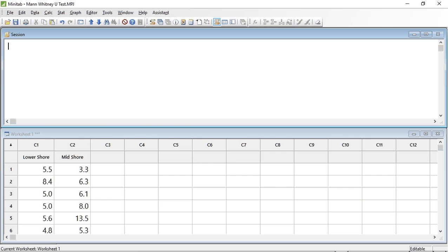I have entered the data from table 11.1 into Minitab in the form of two columns. C1 contains the heights from the lower shore periwinkles, and C2 the heights from the mid-shore periwinkles. So let's do the test.